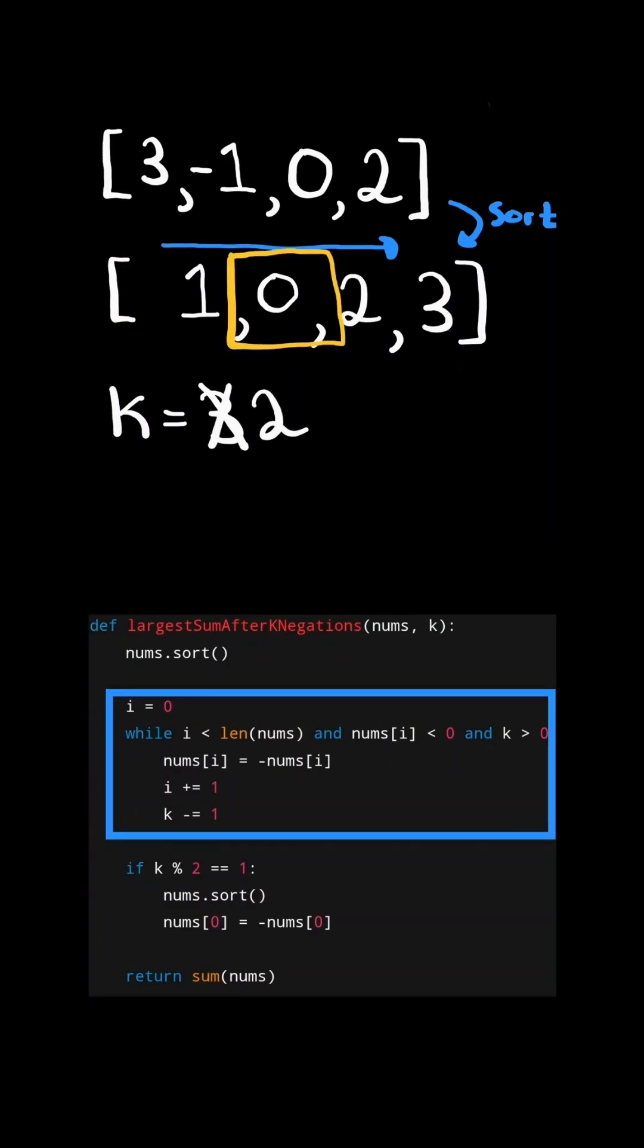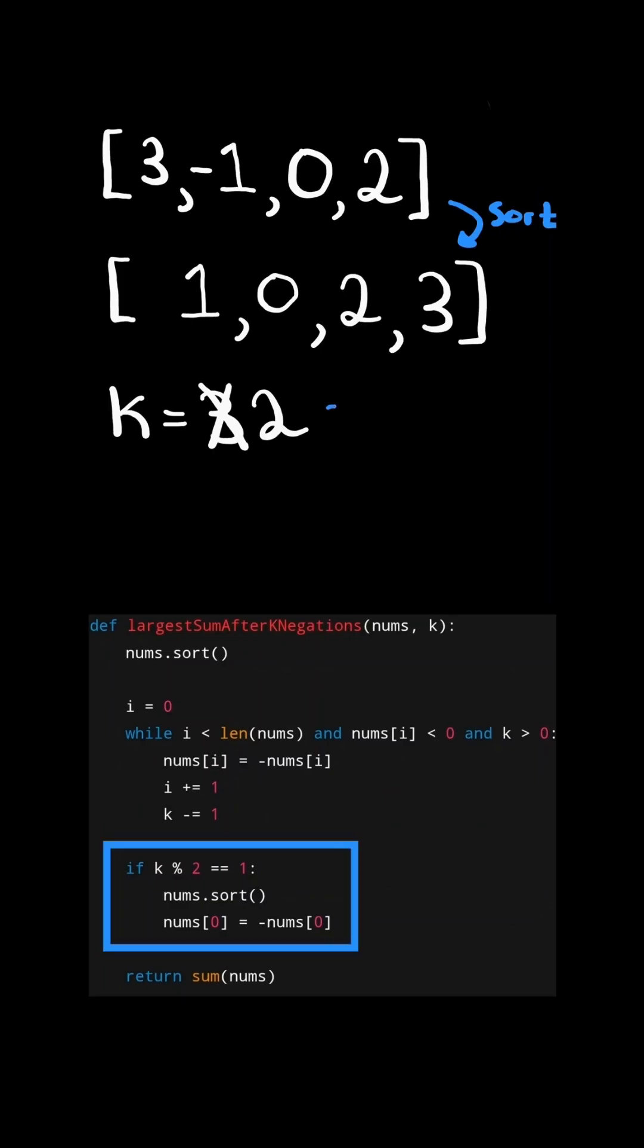Now notice the next number is not a negative. So we break out of this loop and we check if there are more numbers we still need to flip. Since all the numbers are guaranteed to be positive at this point, we can flip a number an even amount of times and it would do nothing.